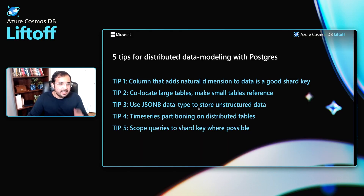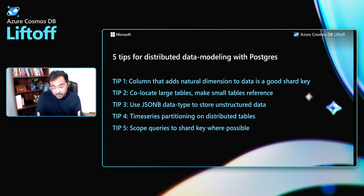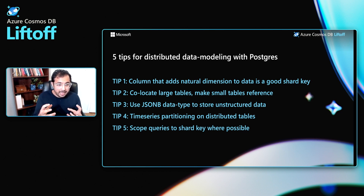To summarize, here are the five tips for distributed data modeling with Postgres. Tip one: a column that adds a natural dimension to data is a good shard key. Tip two: co-locate large tables by distributing them on a common column, and make smaller tables reference tables. Tip three: use the JSONB data type for unstructured and semi-structured data. Tip four: complement distributed tables with time-based partitioning when there's a time dimension. Tip five: scope queries to the shard key where possible. Follow these five tips and you'll have a great experience building scalable operational apps with Azure Cosmos DB for Postgres. Happy testing!